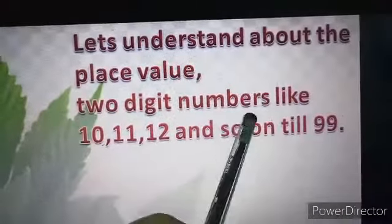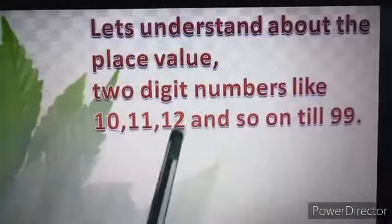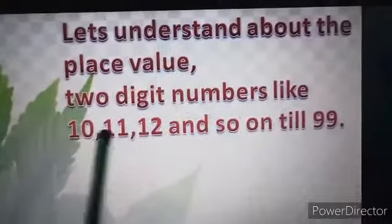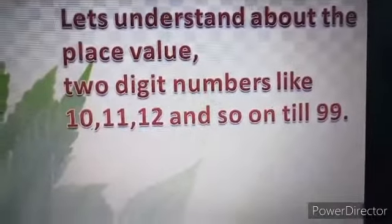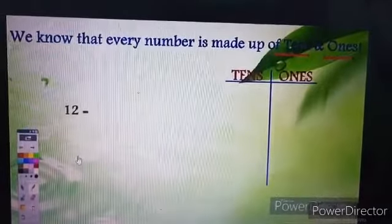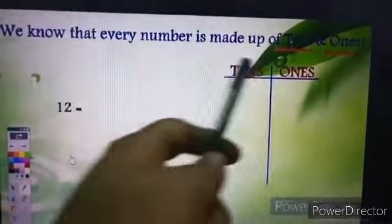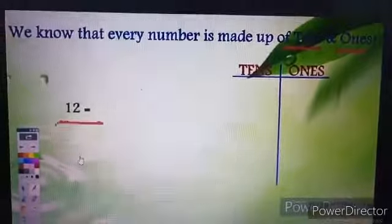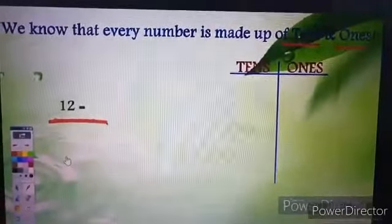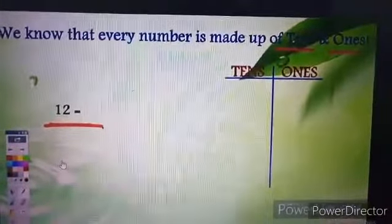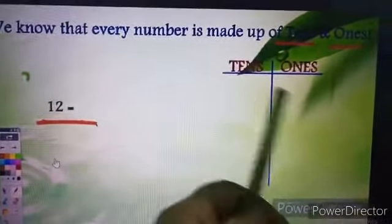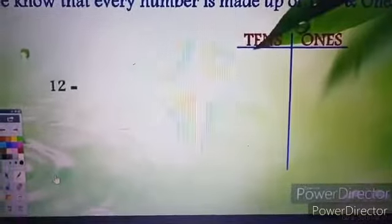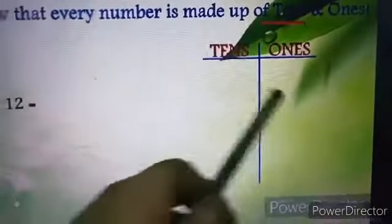Two digit numbers are like 10, 11, 12 and so on till 99. These are two digit numbers. We know that every number is made up of tens and ones. For two digit numbers we have two places that is tens and ones. So we can break every two digit number into tens and ones.